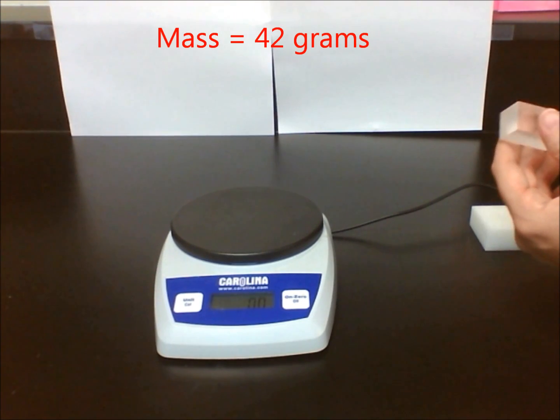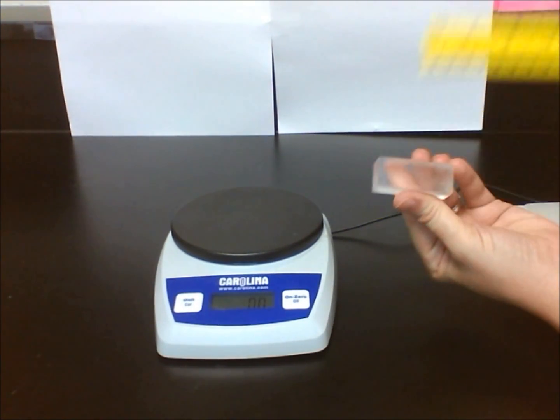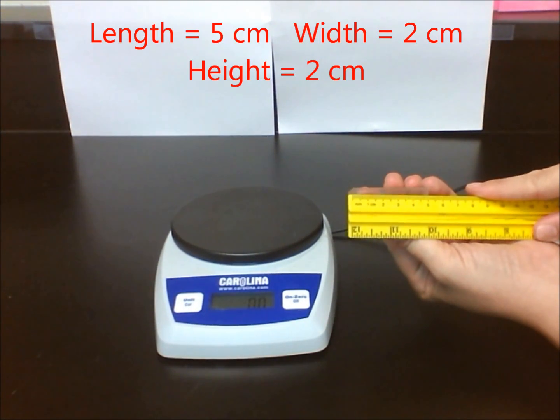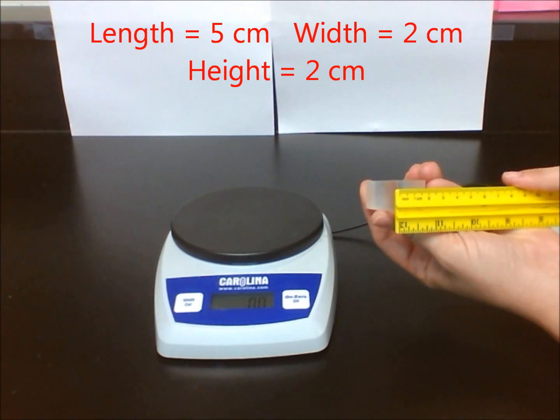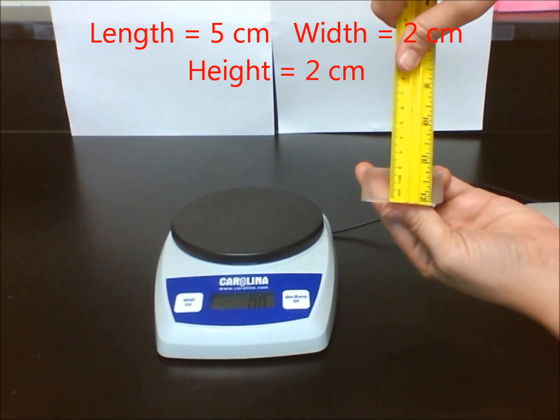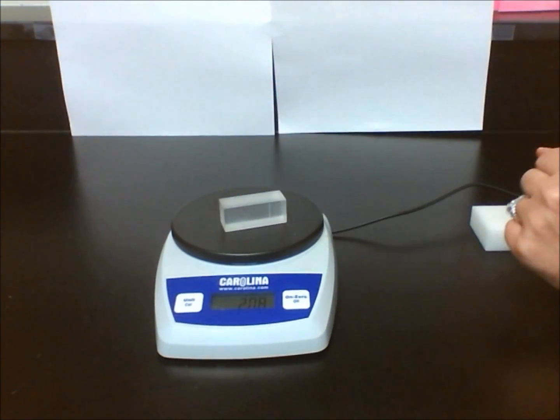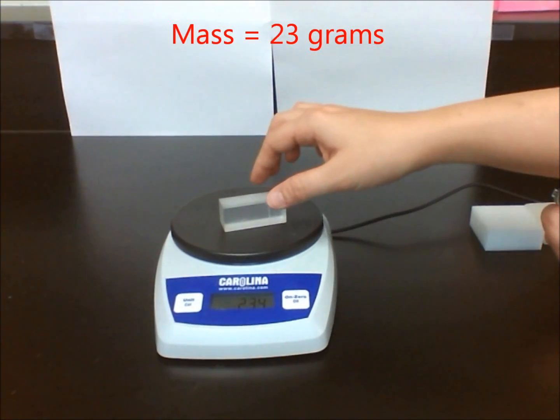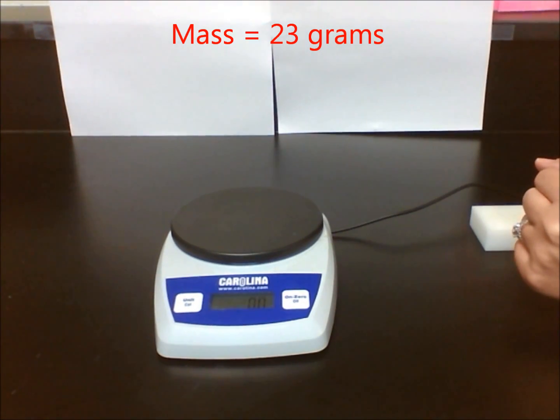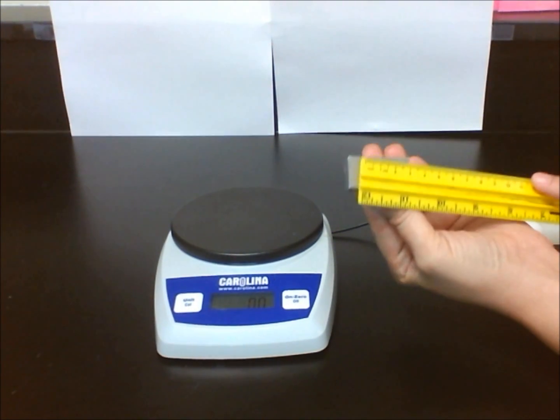Let's repeat the steps again for the transparent block. I am going to measure my length, width, and height in centimeters. Then I am going to multiply these numbers to find the volume. I will then use the scale to find its mass, and I will again divide my mass by my volume to find the density. Let's try that with the aluminum block.